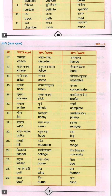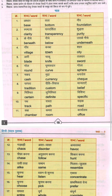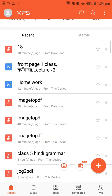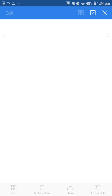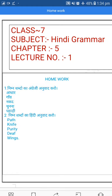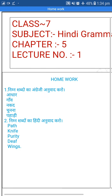Okay children, this way all 25 word groups are complete — each group has 3 words, so 25 groups are done. You have to read and learn them well. Now I am giving you homework. Mention subject Hindi Grammar, Chapter 5th, Lecture number 1st.